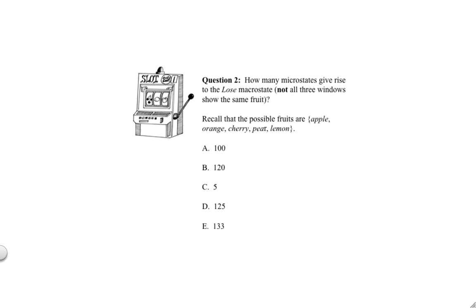Question two was a little more tricky. That question asks, how many microstates give rise to the lose macrostate? That is, not all three windows show the same fruit. Well, the easiest way to answer that is to first figure out how many total possible microstates there are for this whole system, and then subtract out the ones that we know are win microstates, and then we're left with the lose microstates.